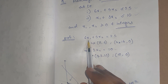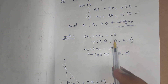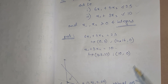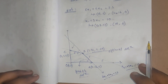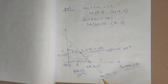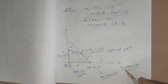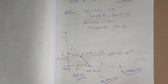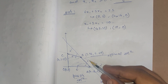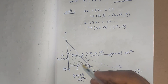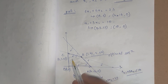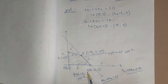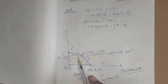We take the two constraints and find coordinates by putting x1 = 0 to get x2, and x2 = 0 to get x1. We plot the graph: the line 6x1 + 5x2 = 25 and the line x1 + 3x2 = 10. Since both inequalities are less than or equal to, the feasible region is towards the origin, and the two lines form a common feasible region.